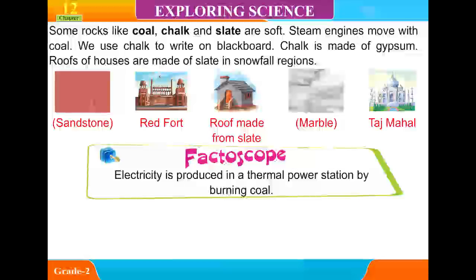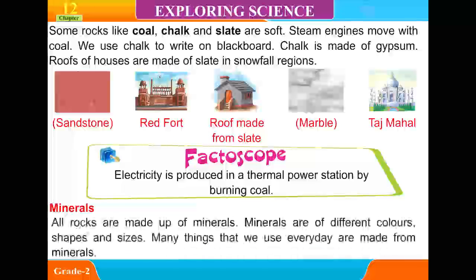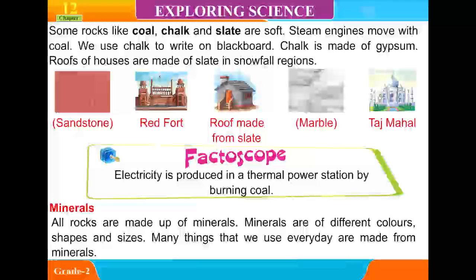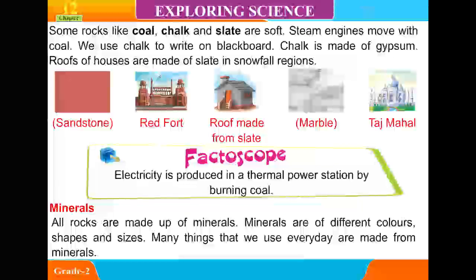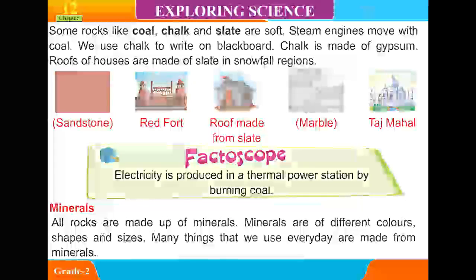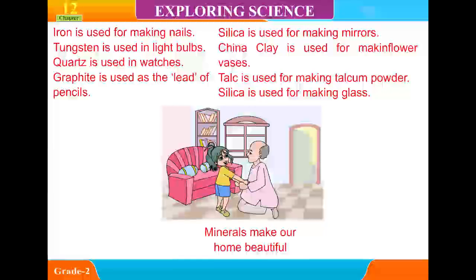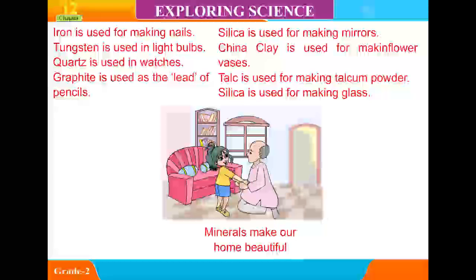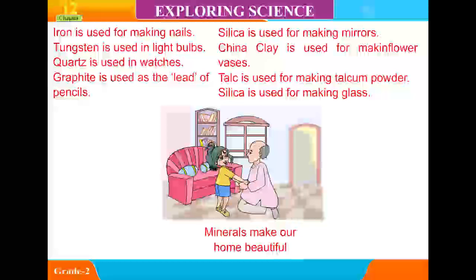Electricity is produced in a thermal power station by burning coal. Minerals: all rocks are made up of minerals. Minerals are of different colors, shapes, and sizes. Many things that we use every day are made from minerals. Iron is used for making nails. Tungsten is used in light bulbs. Quartz is used in watches. Graphite is used as the lead in pencils.